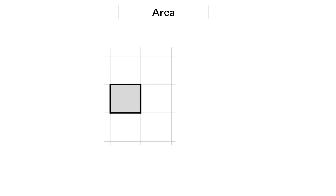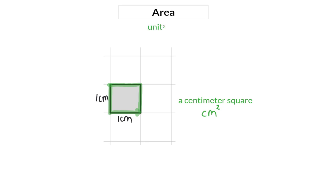Here we have a square that has a length and a breadth of one centimeter. So originally this was a one centimeter line that was expanded by one centimeter, forming a square that we call one centimeter square. Centimeter square is written as centimeter to the power of two, and that is why any area's unit is always the unit squared.